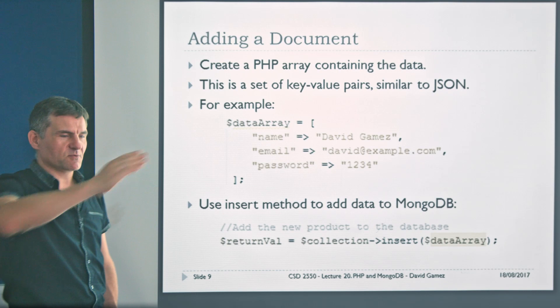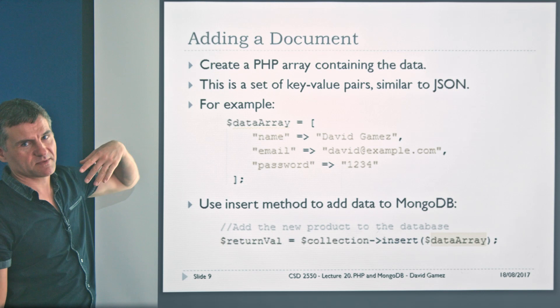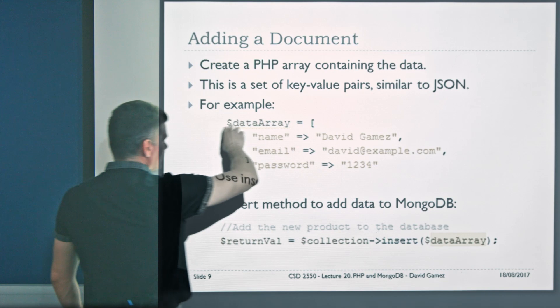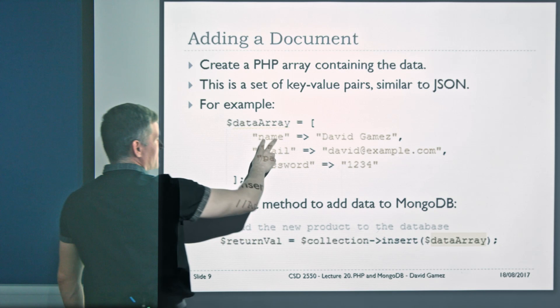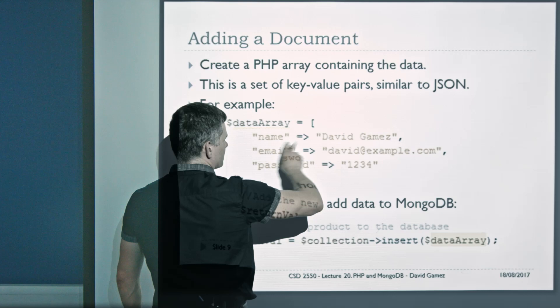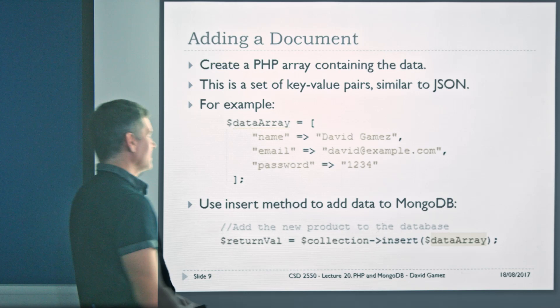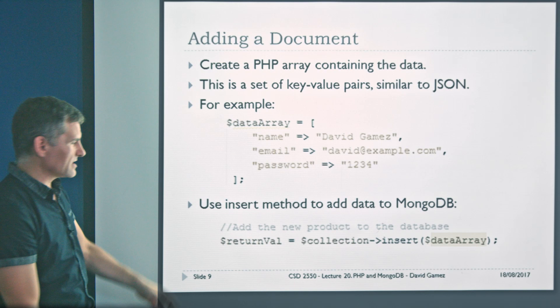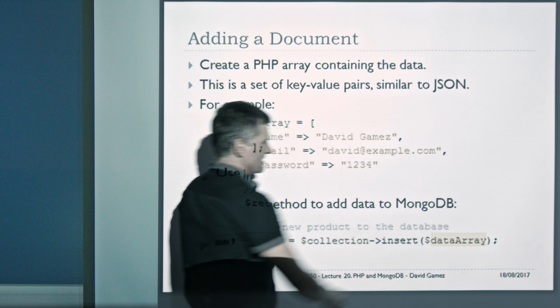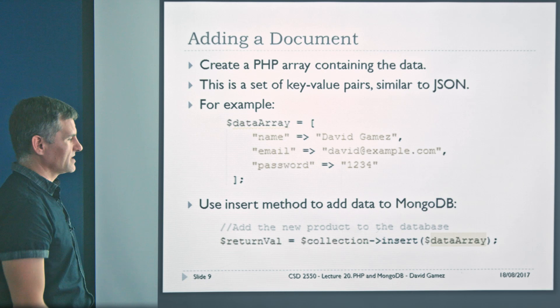PHP has functions for converting to and from PHP objects and JSON objects. If we want to add a document, we need to create a PHP array that contains the data. A PHP array has keys in quotation marks and values using the arrow syntax, with key-value pairs separated by commas. Then all we do is exactly what we did on the command line — we've selected our collection, and we just do collection dot insert, passing in the PHP data structure we want to insert into the database. Very easy, almost identical to the command line.